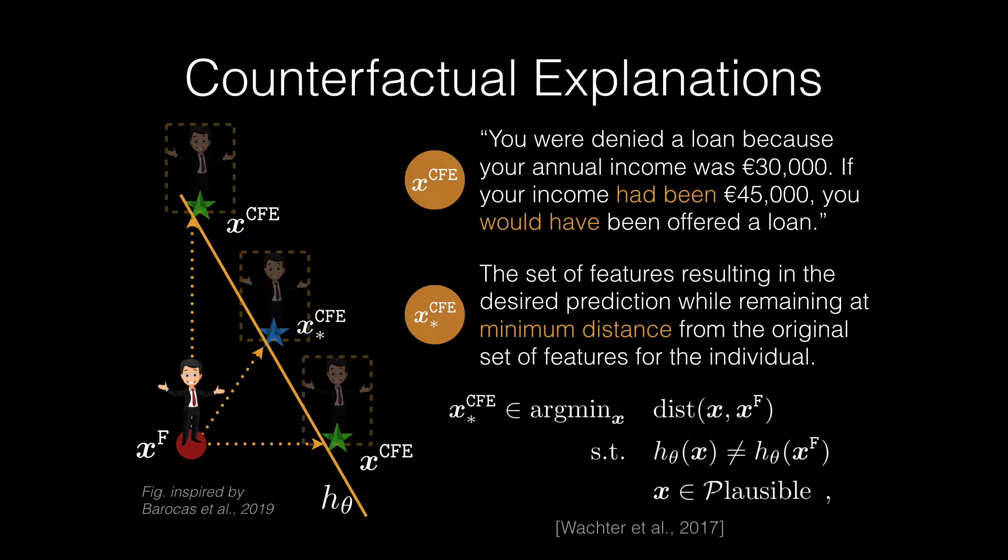Identifying the nearest counterfactual explanation can be formulated as this optimization problem, which is an argument over the space of x's subject to the predefined similarity metric.